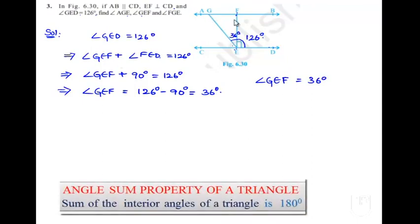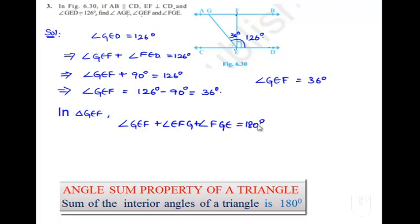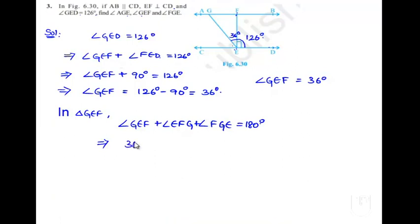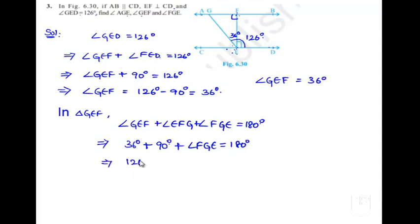Again, if we consider triangle GEF, we know that the sum of angles in a triangle is equal to 180 degrees. We can write angle GEF plus angle EFG plus angle FGE is equal to 180 degrees. Angle GEF is 36 degrees as found above, and angle EFG will be 90 degrees since FE is perpendicular to CD and AB is parallel to CD, therefore EF is also perpendicular to AB.